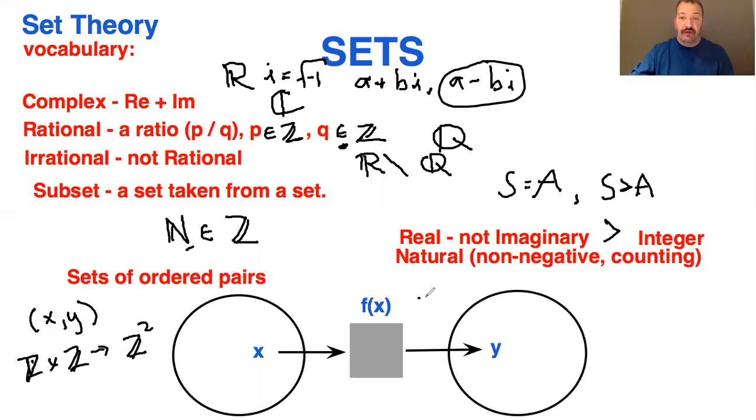For example, right here, f of x. You could define that function as y, or f of x equals x squared. So you take the input x, you square it, and then you would get y here, the output.